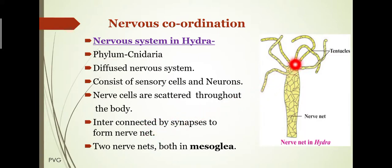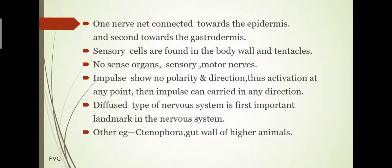The nerve net is the characteristic feature. In the body there is a network of nerves, therefore it is known as the nerve net. There are two nerve nets, both in mesoglea — the middle part in between the ectoderm and endoderm. One nerve net is connected to the epidermis and the second towards the gastrodermis.